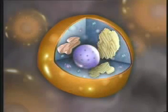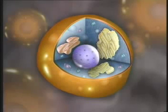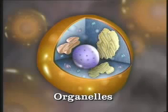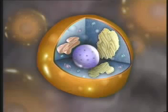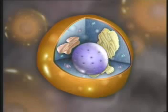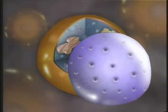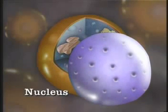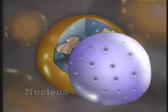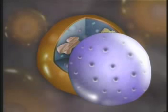Inside the cell membrane, there are many different structures called organelles, which literally means little organs. One organelle, the nucleus, is the control center of the cell. The nucleus has a membrane that has pores in it, which allow certain molecules to enter or leave the nucleus.